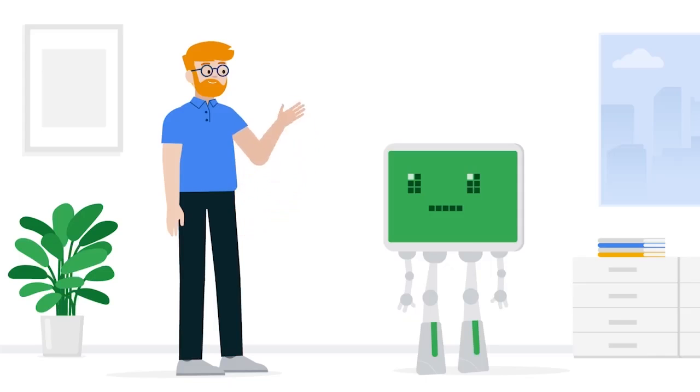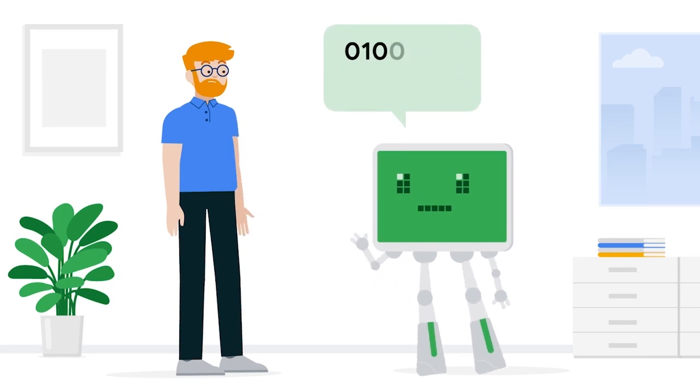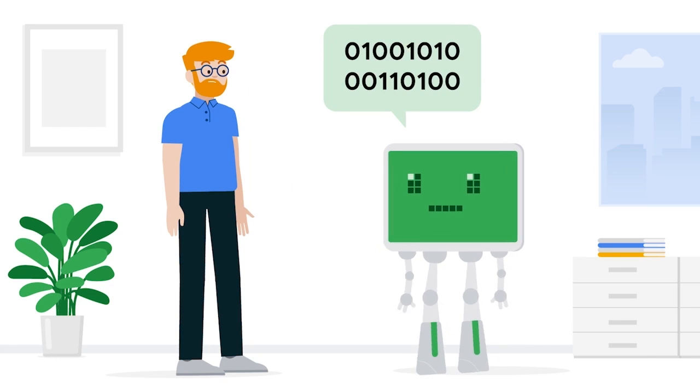Another reason why operating systems are important is that they help humans and computers communicate with each other. Computers communicate in a language called binary, which consists of zeros and ones. The OS provides an interface to bridge this communication gap between the user and the computer, allowing you to interact with the computer in complex ways.